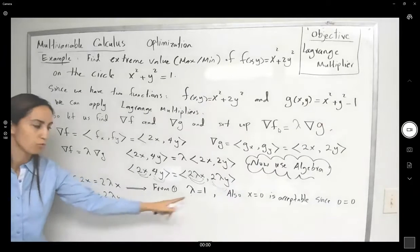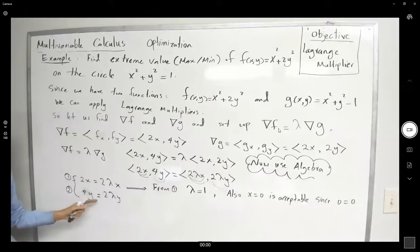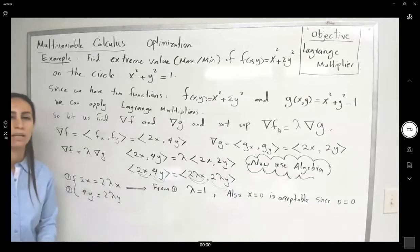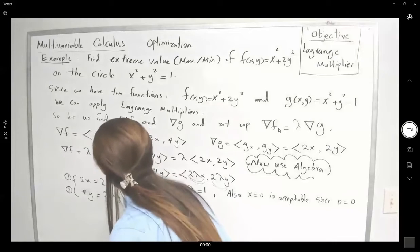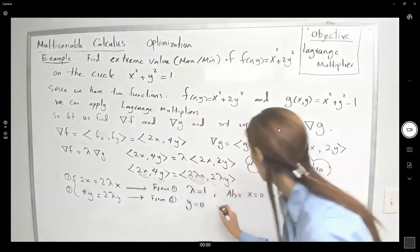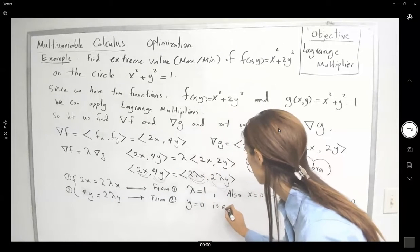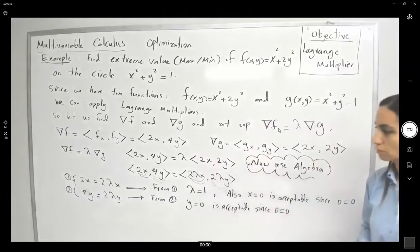If λ = 1 in the first equation, it cannot also be 1 in the second — because that would give 4y = 2y, which forces y = 0. So when λ = 1, we need y = 0.